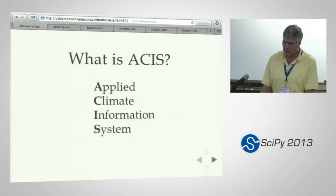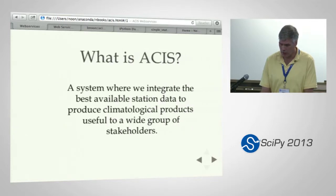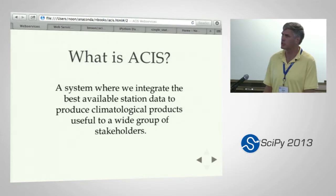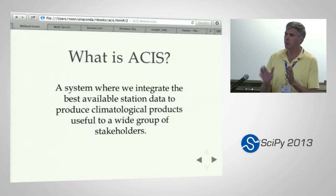What is ASIS? ASIS is the Applied Climate Information System. We turn climate data into information. We try to find the best available data at any particular station. As data comes in real time, it's raw. As it's quality controlled and put into the archives, it gets better over time. So we replace that data, keep all the data separate, and then on the fly, on the way out, we give you the best available for any particular point in time.